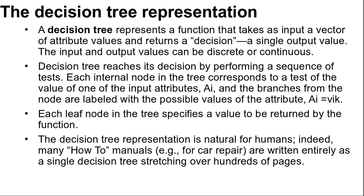So Decision Tree Representation. A decision tree represents a function that takes as input a vector of attribute values, returns a decision, a single output value. The input and output values can be discrete or continuous.